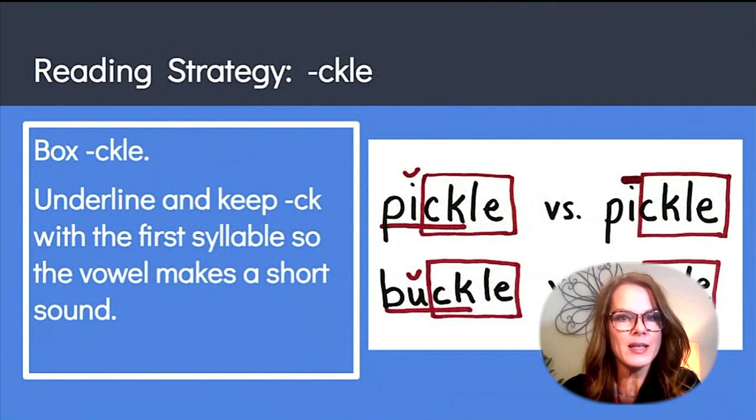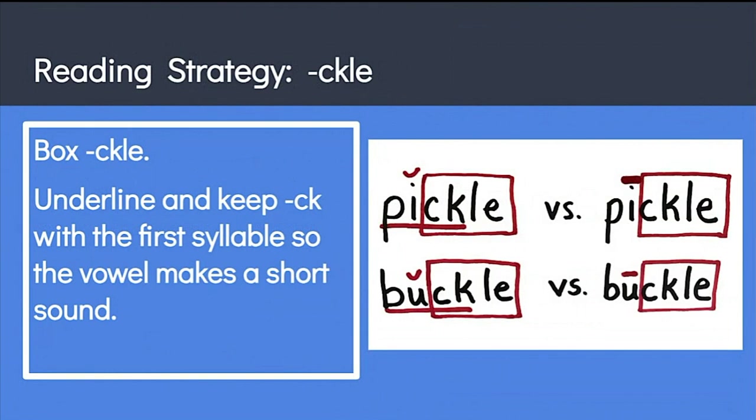Words with CKLE can be connected to the CK ending rule. Ask the students to recall the CK ending rule. Do you guys remember? In a one-syllable word with one short vowel, CK says K when it touches the vowel. Help them to identify the CK words in these consonant LE words so they read the word correctly. You can have them box the CKLE and say the sound and then find the one-syllable CK word inside, read it, and then add the LE ending, the L ending. Keeping the CK sound with the first syllable helps the child read the syllable as a closed syllable with a short vowel sound like pickle and buckle rather than an open syllable with a long vowel sound like pickle and buccal.